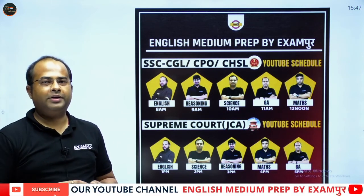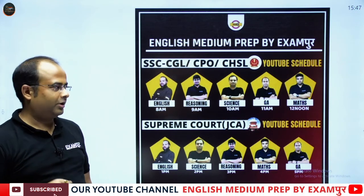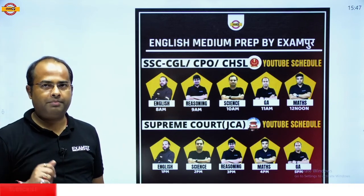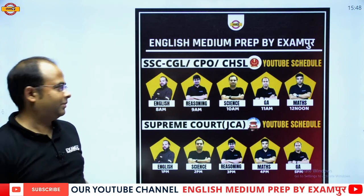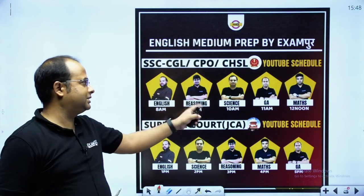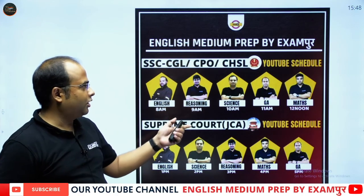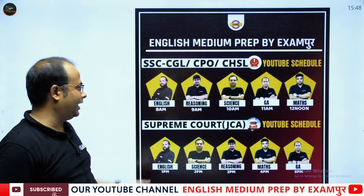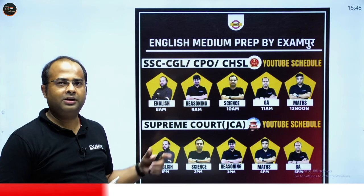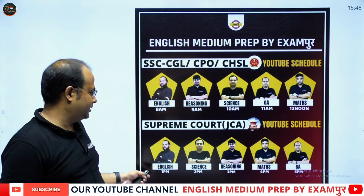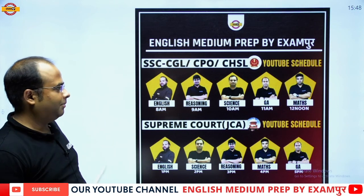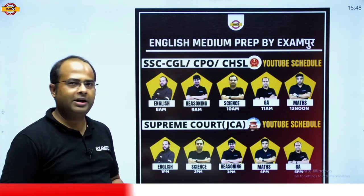With this, we come to the end of today's session. The session plan for English Medium Prep by Exampur is: English at 8 a.m., Reasoning at 9 a.m., Science at 10 a.m., General Awareness at 11 a.m., and Maths at 12 noon. We have also started a special batch for JCA — Junior Court Assistant in Supreme Court — with English at 1 p.m., Science at 2 p.m., Reasoning at 3 p.m., Maths at 4 p.m., and General Awareness at 5 p.m.